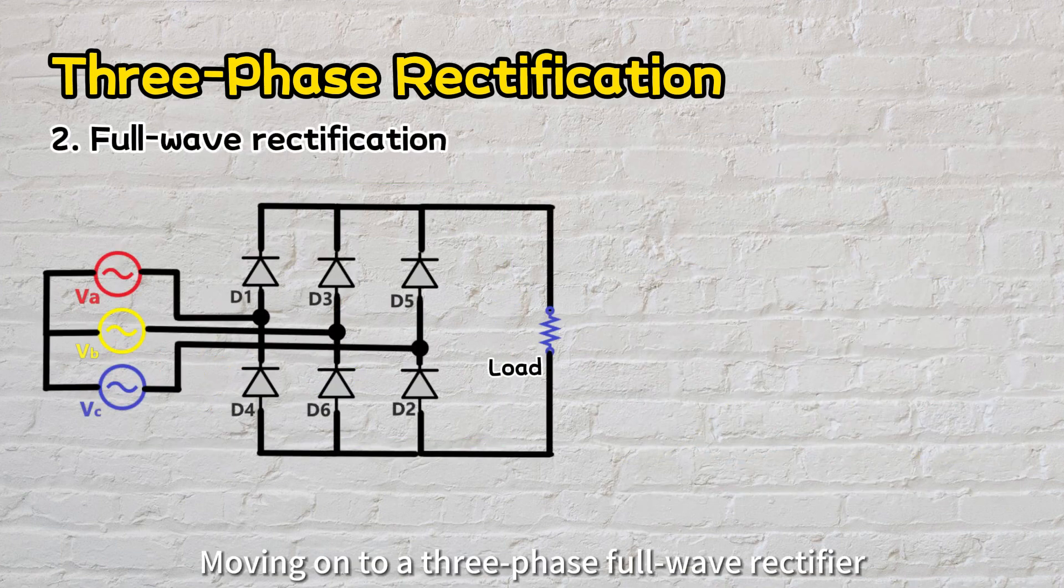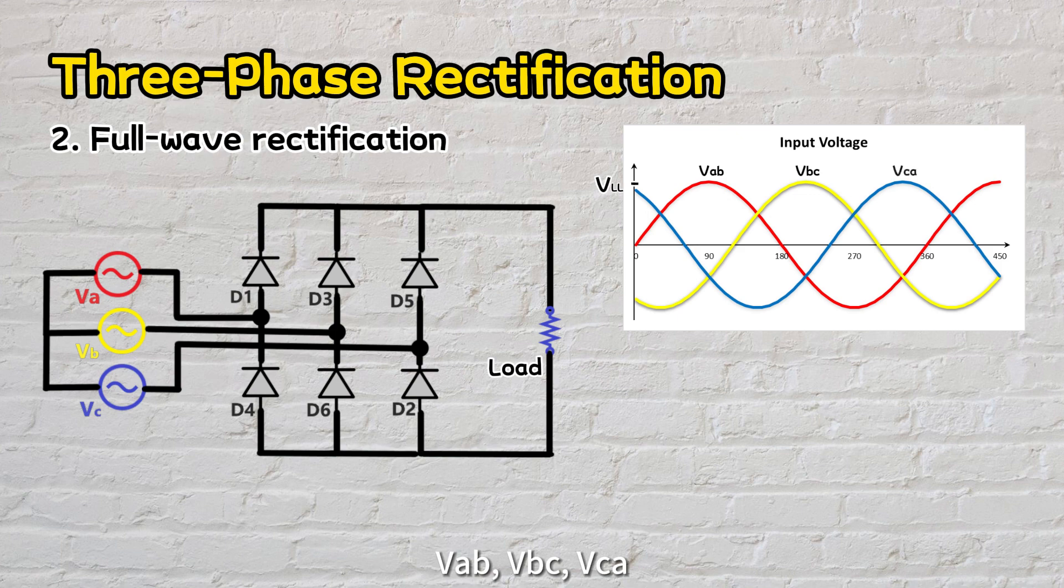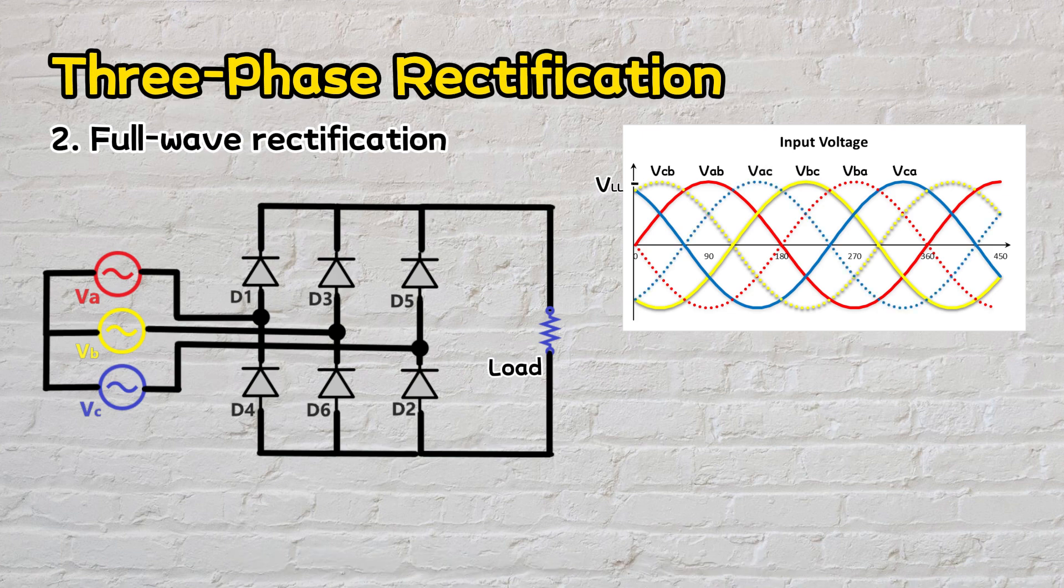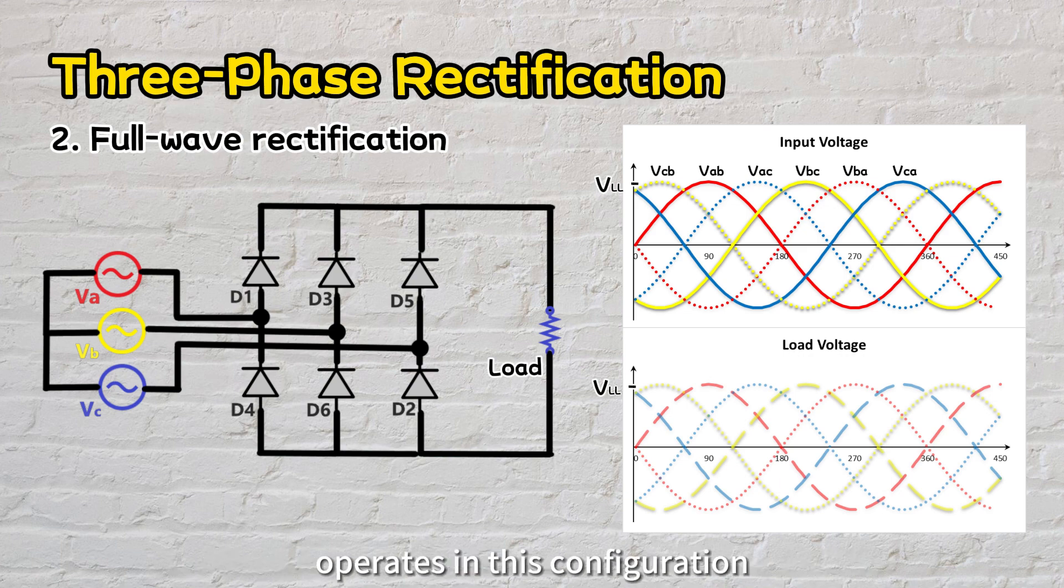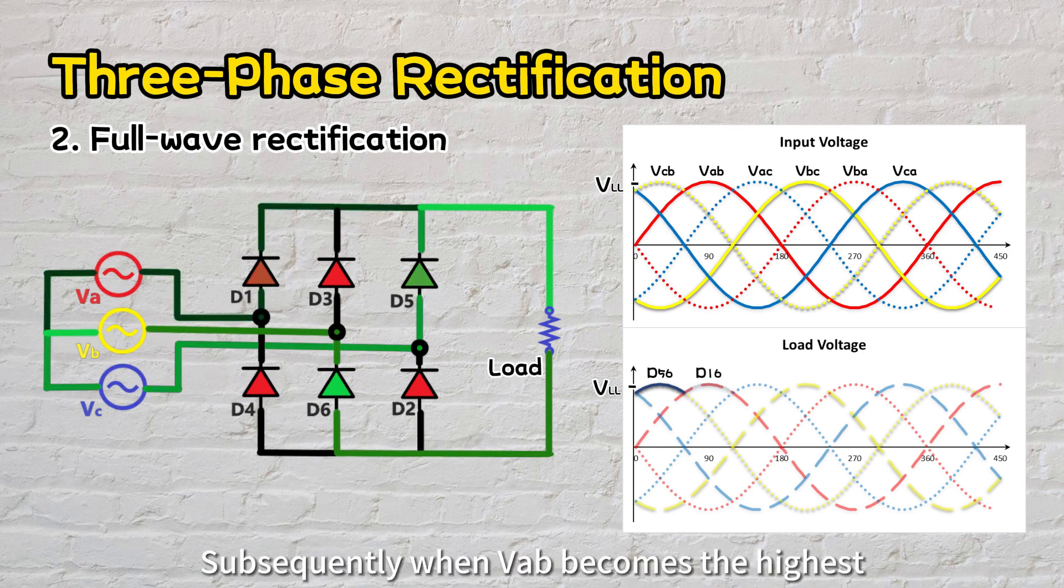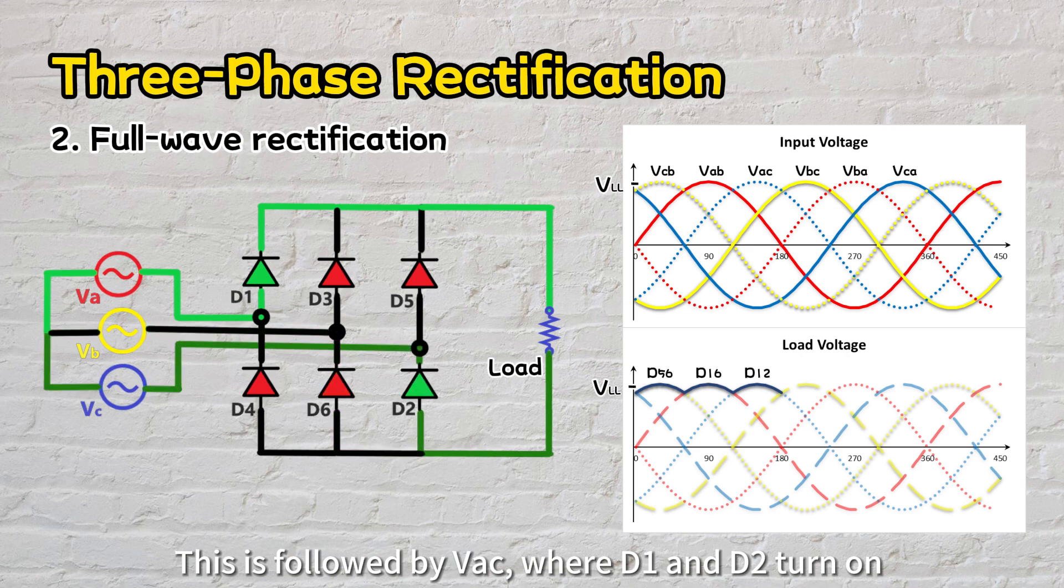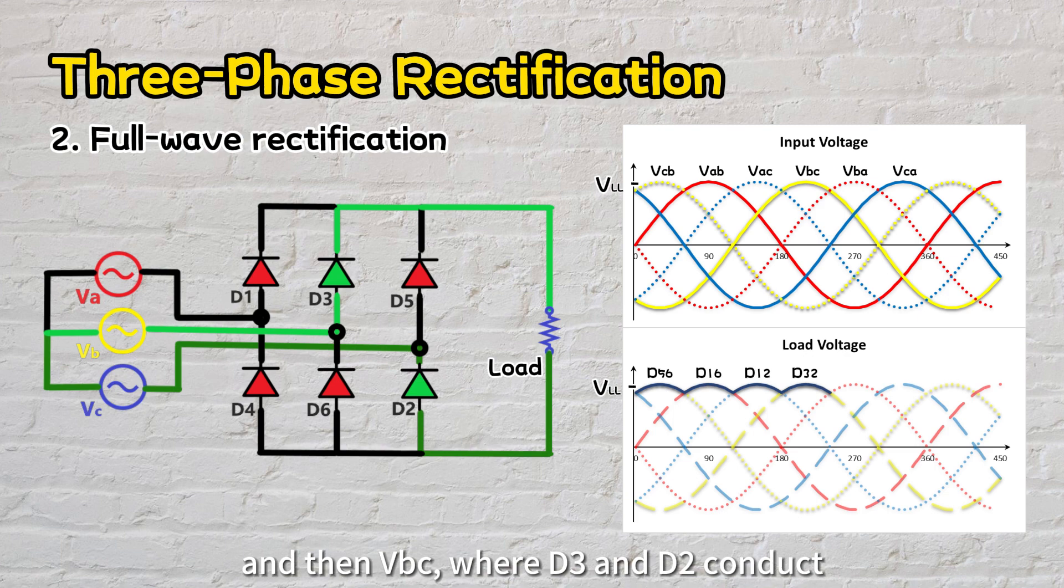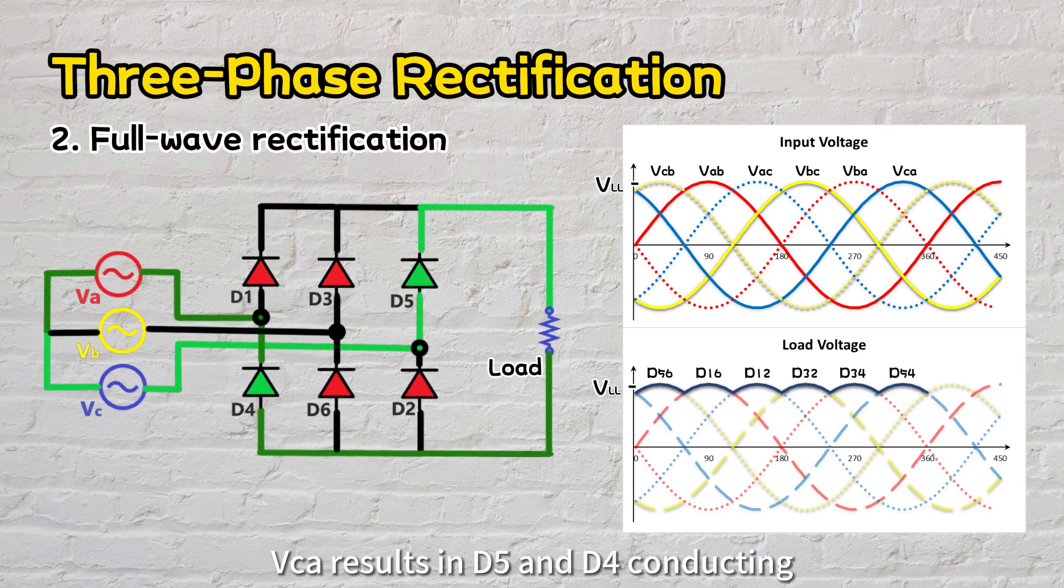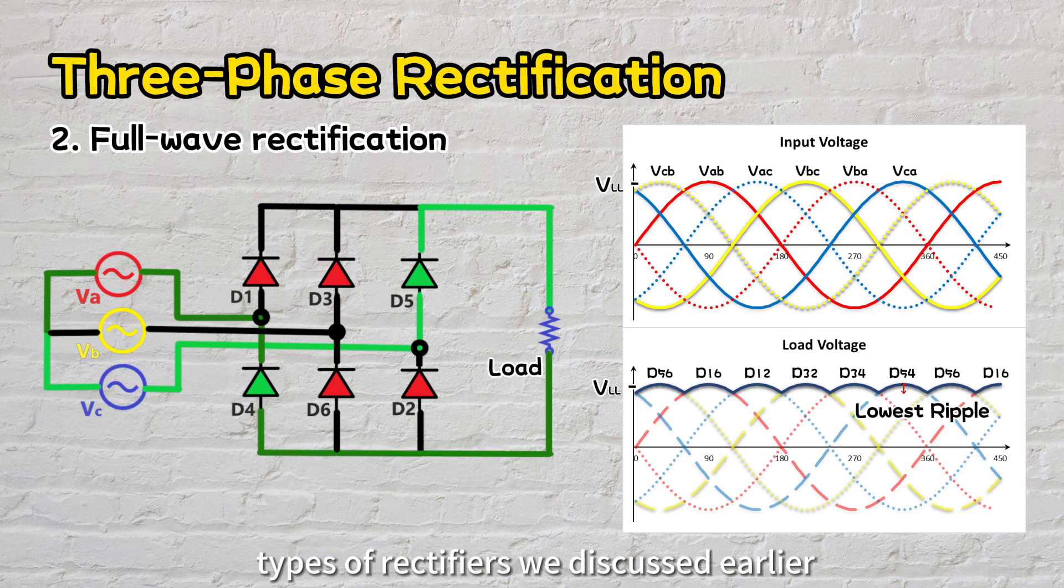Moving on to a three-phase full-wave rectifier, it utilizes six diodes labeled D1 to D6, all connected to line-to-line voltages VAB, VBC, VCA, and their reverse combinations VBA, VCB, and VAC, totaling six waveforms. Let's explore how a three-phase full-wave rectifier operates in this configuration. Initially, when VCB is the highest, D5 and D6 turn on. Subsequently, when VAB becomes the highest, D1 and D6 activate. This is followed by VAC where D1 and D2 turn on, and then VBC where D3 and D2 conduct. Then VBA leads to D3 and D4 activation, and finally VCA results in D5 and D4 conducting. This pattern repeats every cycle and ensures that the output has the lowest voltage ripple compared to the other types of rectifiers we discussed earlier.